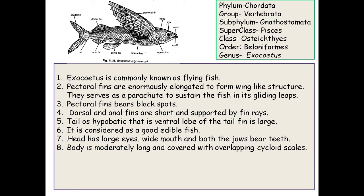Pectoral fins bear some black spots. The dorsal and anal fins are short and supported by fin rays. The tail is hypobatic — the ventral lobe of the tail fin is large while the dorsal lobe is small. It is considered a good edible fish, with a head bearing large eyes and a wide mouth.